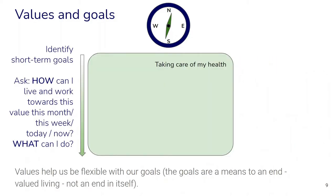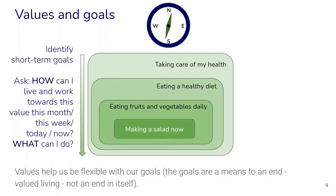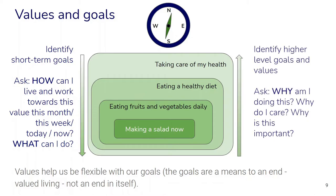Here's another way to think about the relation of values and goals. Let's say you have a value like taking care of my health. We can ask: how can I live and work towards this value this month, this week, or right now? What specifically could I do? This helps identify short-term goals, such as eating a more healthy diet this year, eating fruits and vegetables daily this week, or making a salad right now. Conversely, if we have certain goals, we can also ask why do we actually care — why is this important to me — to help identify higher-level goals and values.